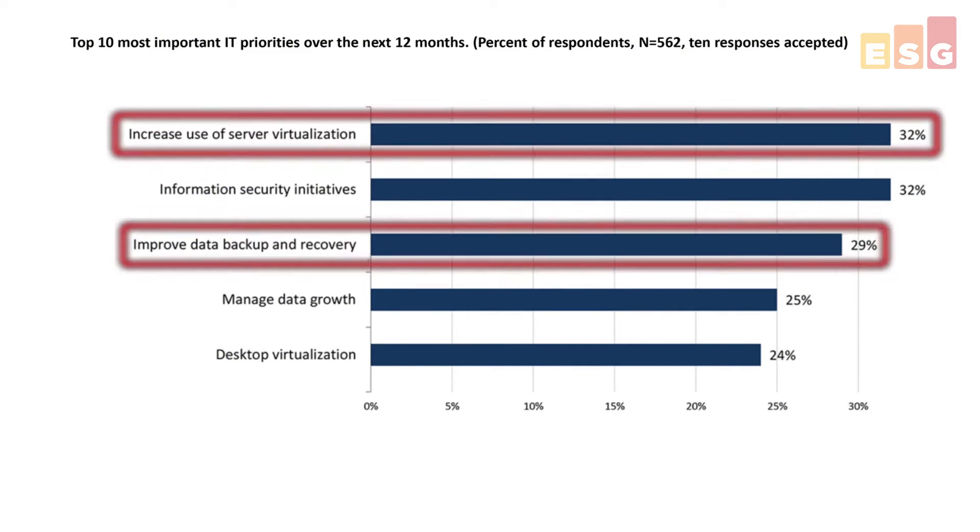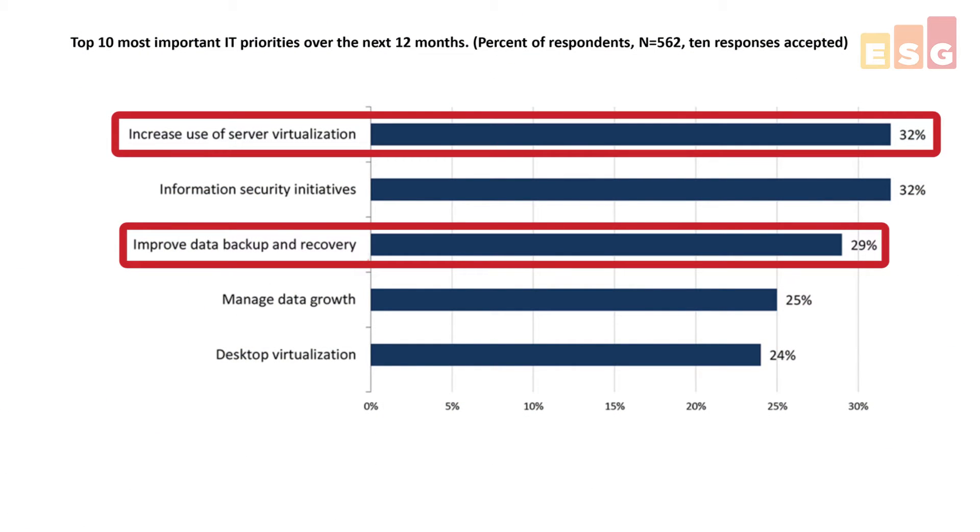Protecting data centers has never been more important, thanks largely to the advent of software-defined data centers with dense collections of virtual machines. Server virtualization and improving data protection are both big priorities, maybe because smart organizations that modernize their production server infrastructures modernize their protection capabilities at the same time. They've learned that legacy backup tools that aren't designed for modern infrastructures aren't reliable enough anymore, and sometimes those legacy solutions can even hinder the production environment.